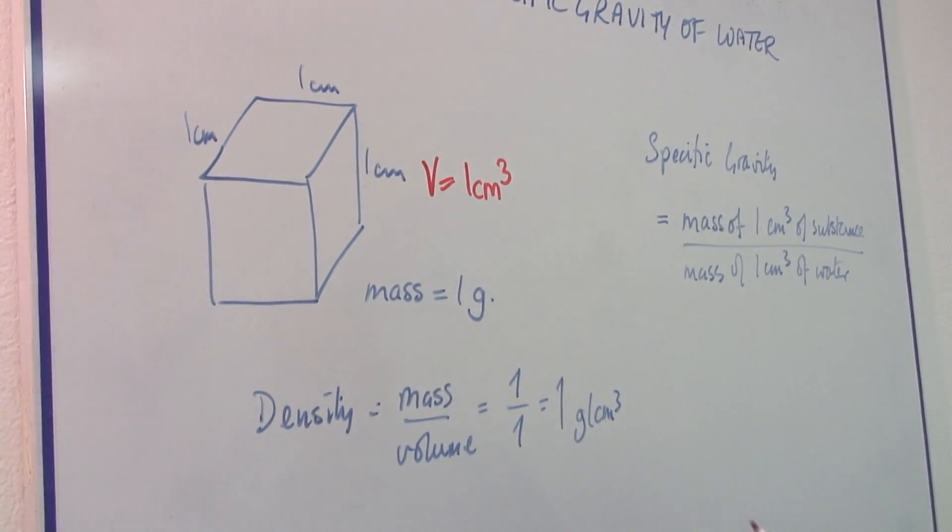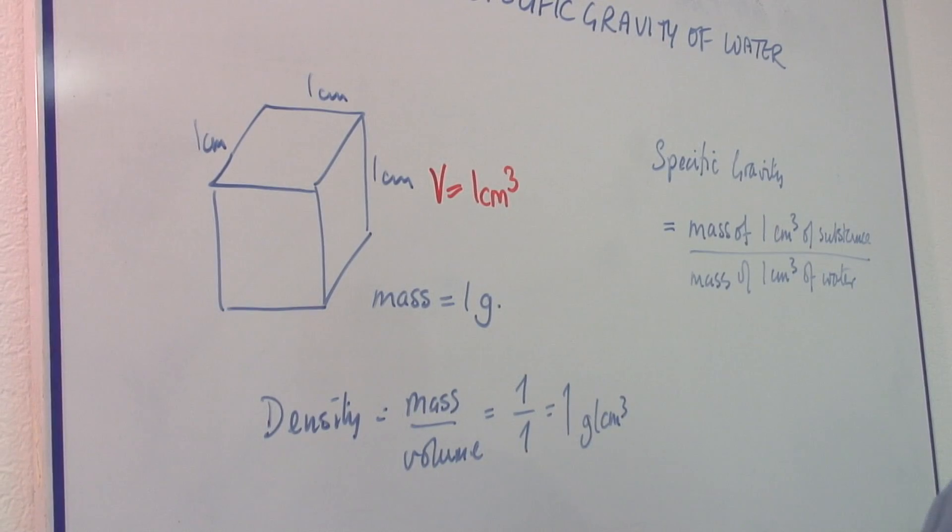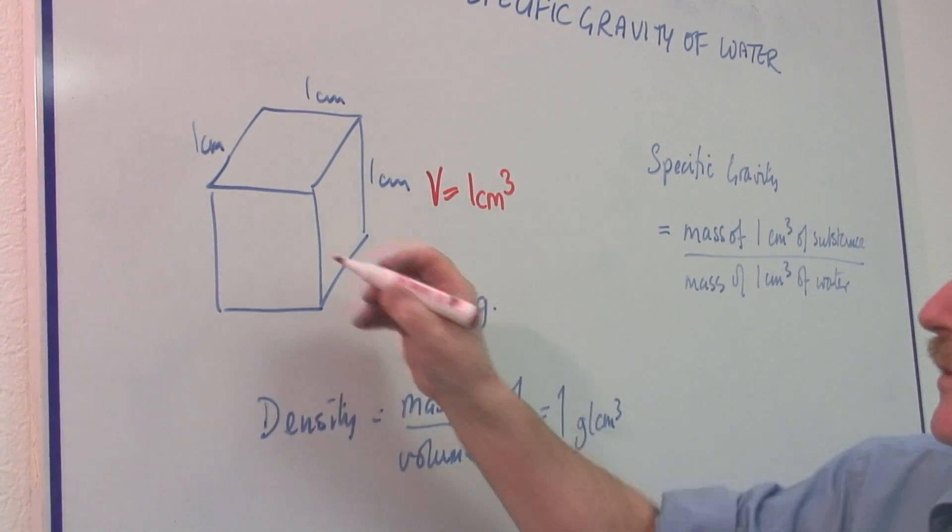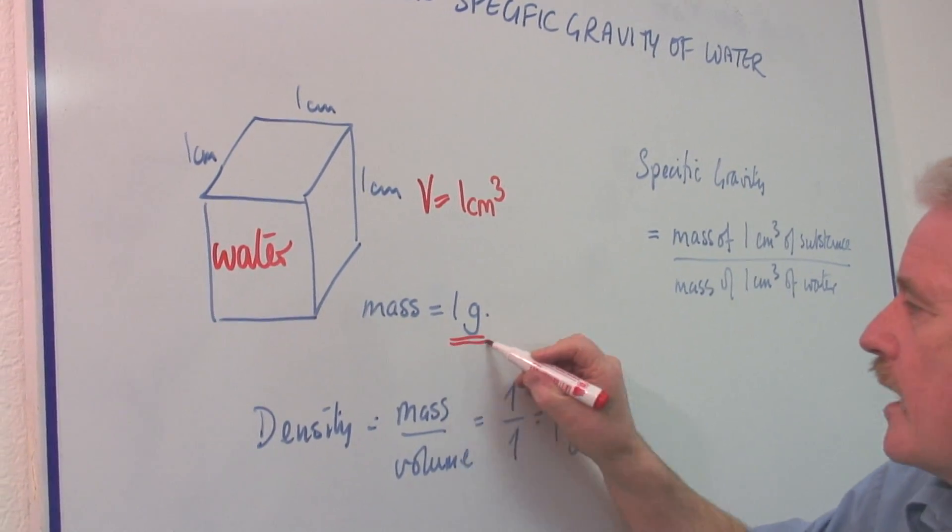Now the mass of this cube will be actually one gram if it is water. If this is a cube of water, then its mass is one gram.